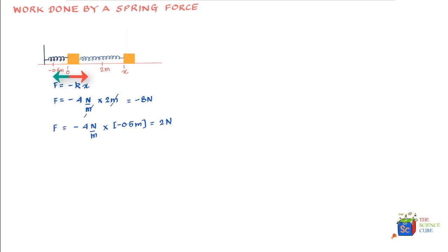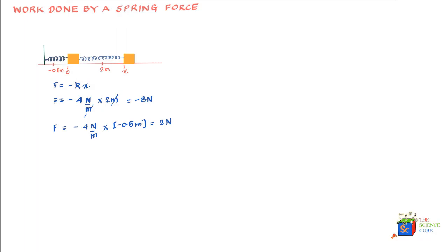That takes us to the next question: how do we find the work done by the spring force on the mass, considering that the force is variable? It's a linear function of x and it's constantly changing. To find this, let's consider the box which has been pulled to the right to a distance of x_n.